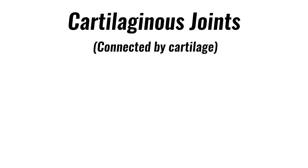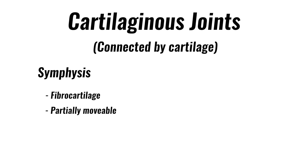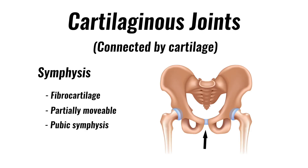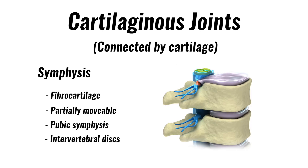Cartilaginous joints occur where bones are connected by cartilage. There are two types which correspond to the two types of cartilage. Symphysis joints are connected by fibrocartilage. These are partially movable joints and include the pubic symphysis.